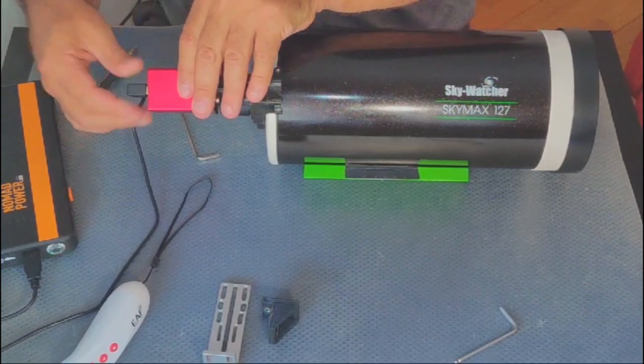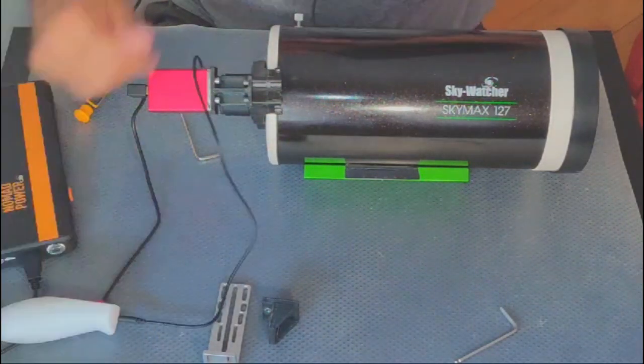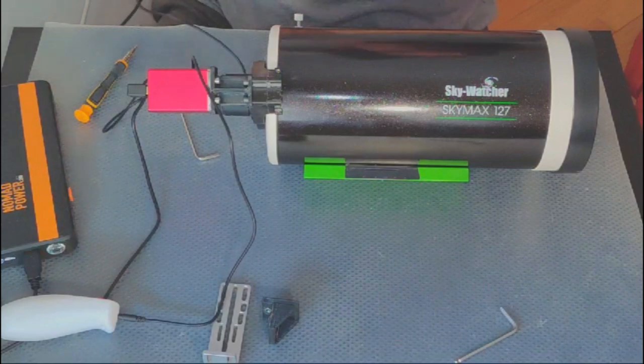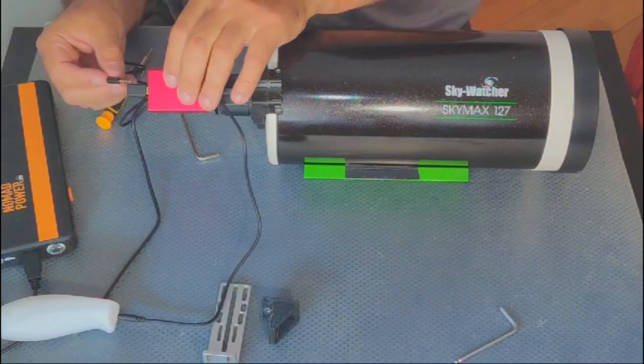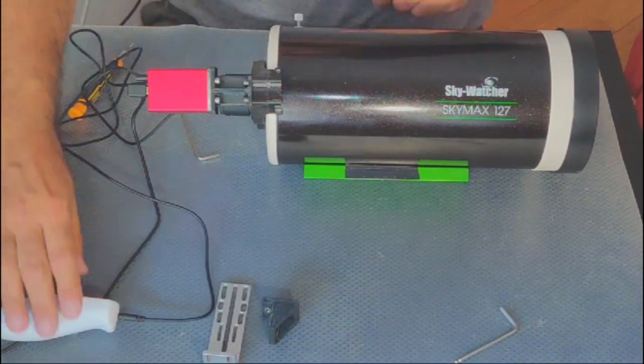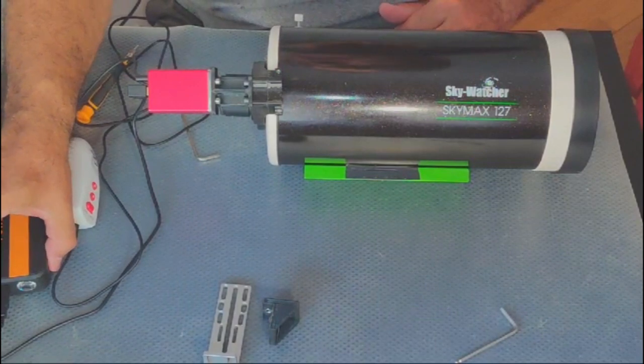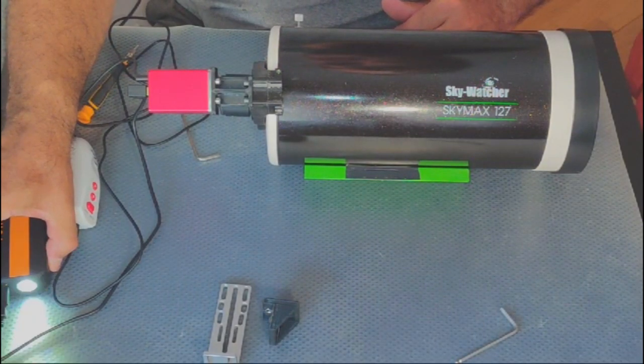Finally, connect the wires, in this case a USB power source and the manual control pad, checking if everything is firmly secure. Check ZWO electronic focuser's manual to program the range and general operation. Most important, don't forget to start with the focus near the extended position for a given camera or visual observation setup.